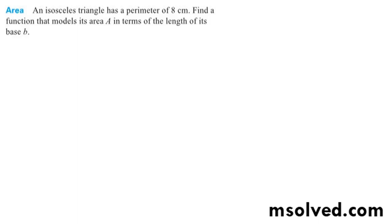Here we have an isosceles triangle, meaning two sides are the same. Its perimeter is equal to 8 centimeters.